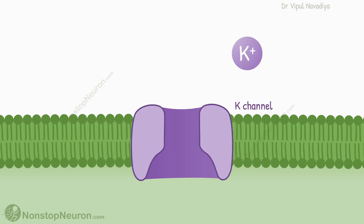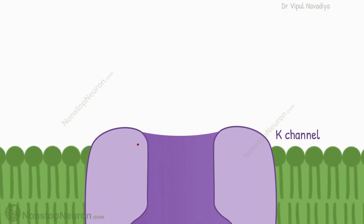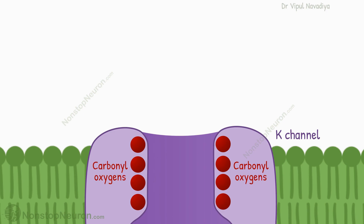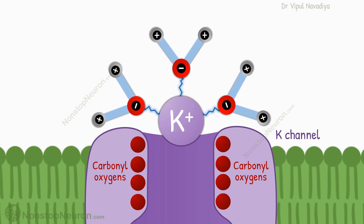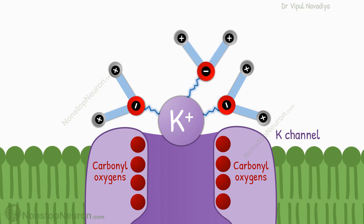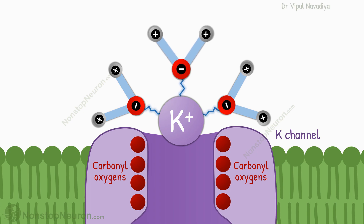If sodium ions are smaller than potassium, why don't they also diffuse through the potassium channel? Near the outer side of the potassium channel, the pore region has carbonyl oxygens. Let's say a potassium ion with all its surrounding water molecules has come close to it. We earlier saw that hydrogen bonds keep shifting from molecule to molecule as ions move freely in the liquid state of water. Similarly here, the bonding of the potassium ion can shift from a water molecule to the carbonyl oxygen.